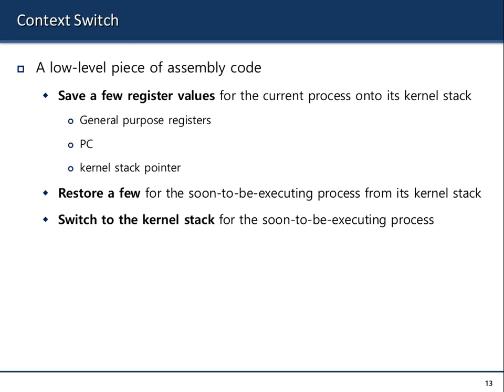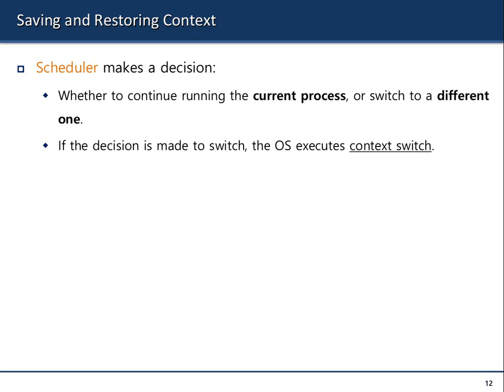Let's review this. The scheduler — which is the next chapter we're going to talk about — will be involved in selecting the process to switch. Normally, the scheduler has something to do with the policy — selecting which process to run on the CPU — whereas the context switch is the mechanism. Policy is for 'which one,' mechanism is more on 'how.'